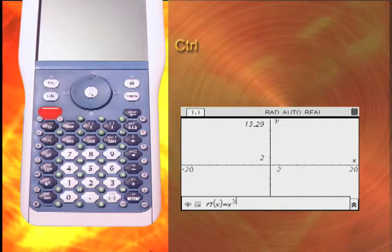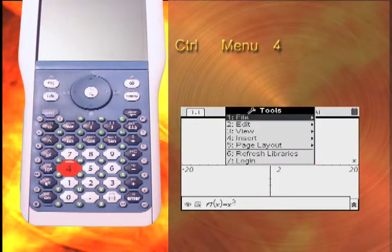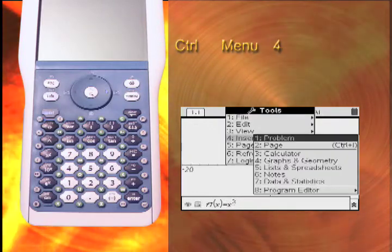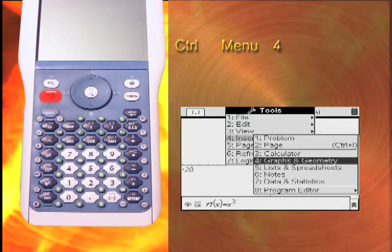And that's simply because x squared is the area of a square with side length x. Press ctrl and menu, then 4 to delete the graph. Press tab to move to the entry line.